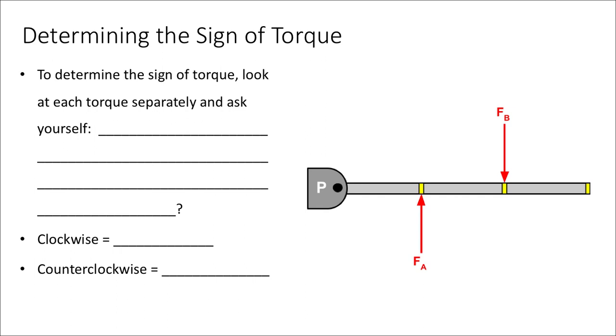In order to determine the sign of torque, either positive or negative, all we have to do is look at each torque separately. If we're given more than one torque, for example on the right-hand side here,